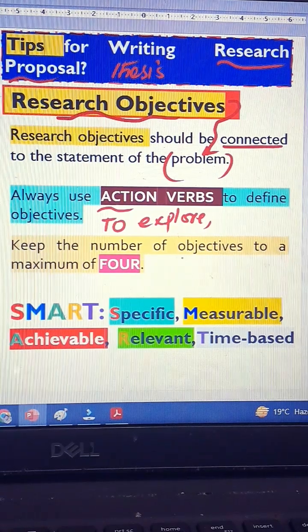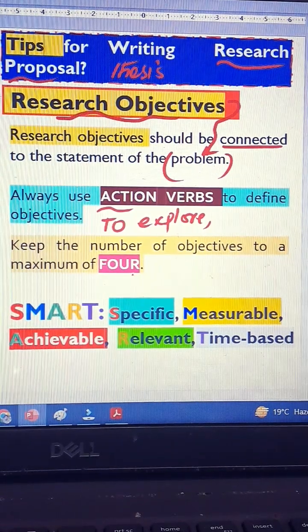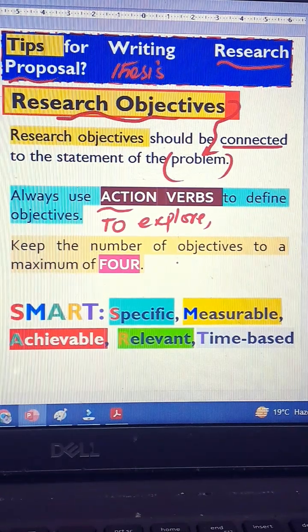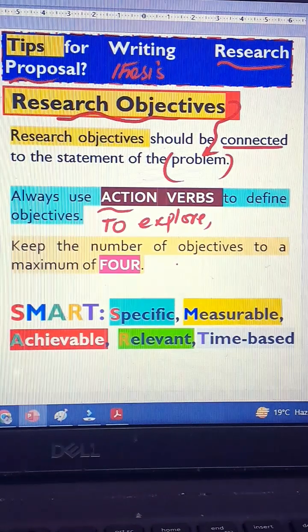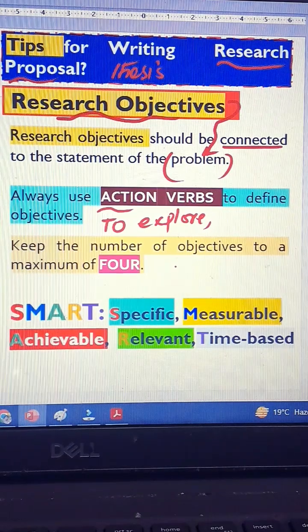Keep the research objectives less than four or maximum four. Three are ideal or four. If you keep it more, it will be very, very hard for you to achieve.